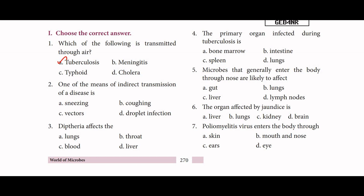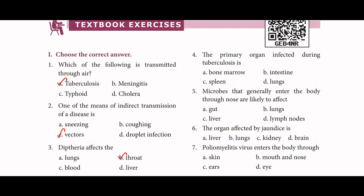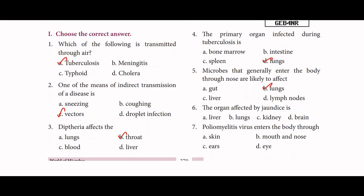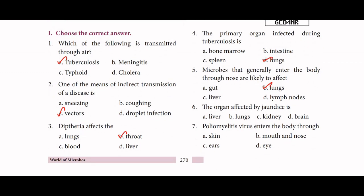Indirect transmission — the answer is vector. Third, diphtheria affects the throat. The primary organ infected during tuberculosis is lungs. Microbes that generally enter the body through the nose are likely to affect lungs. Sixth, the organ affected by jaundice is liver. Seventh, poliomyelitis virus enters the body through mouth and nose.